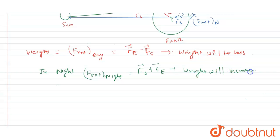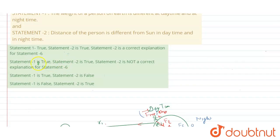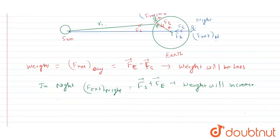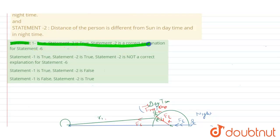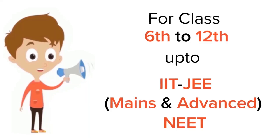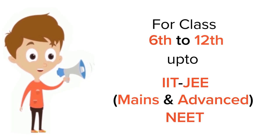So from this discussion, if we look at the option, our option number first will be correct answer of this given problem. Because due to this explanation we are observing the effect in weight. So this will be the correct answer of this given problem, in which it is saying that statement first and second both are true, but statement two is the correct explanation of this given statement. So this will be our final answer. Thank you.